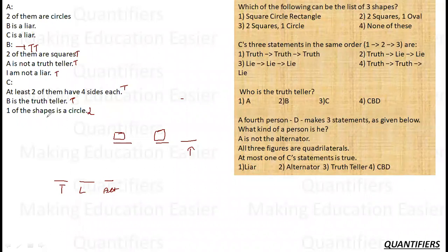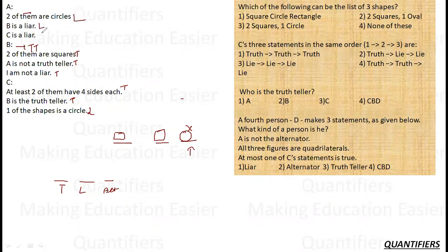C's third statement is a lie. The third statement says one of the shapes is a circle — but since this is a lie, none of the shapes is a circle based on this statement. So the third shape is not a circle. Now, A has to be the liar. A's statements — 'two of them are circles,' 'B is a liar,' 'C is a liar' — all three are lies, which is consistent with A being the liar.